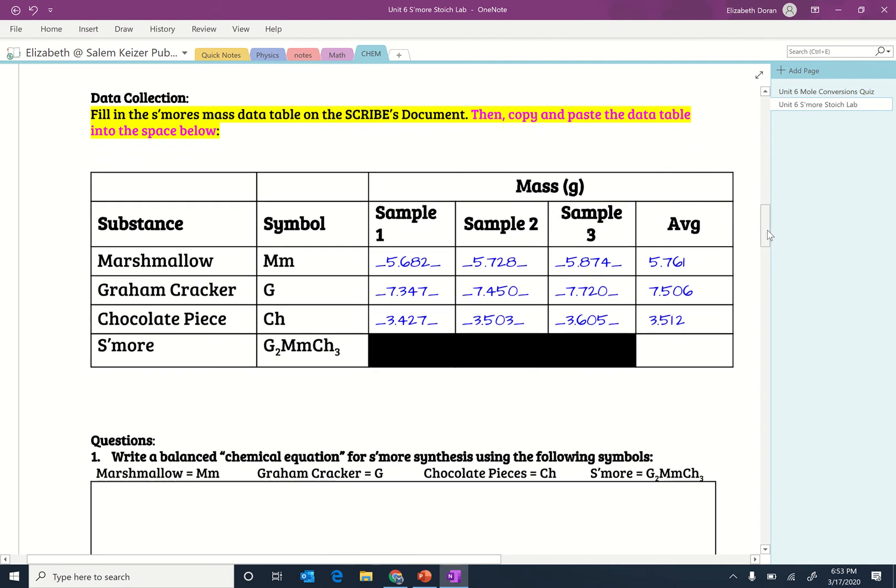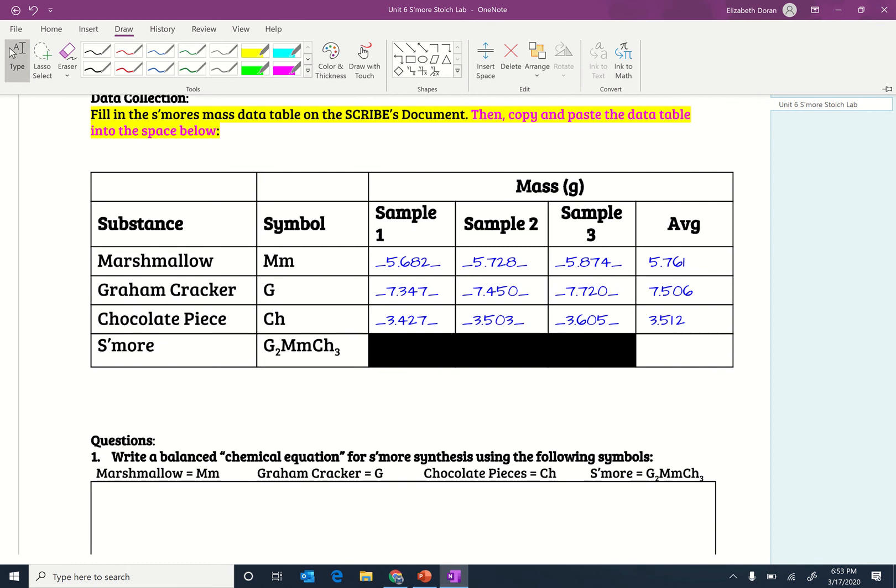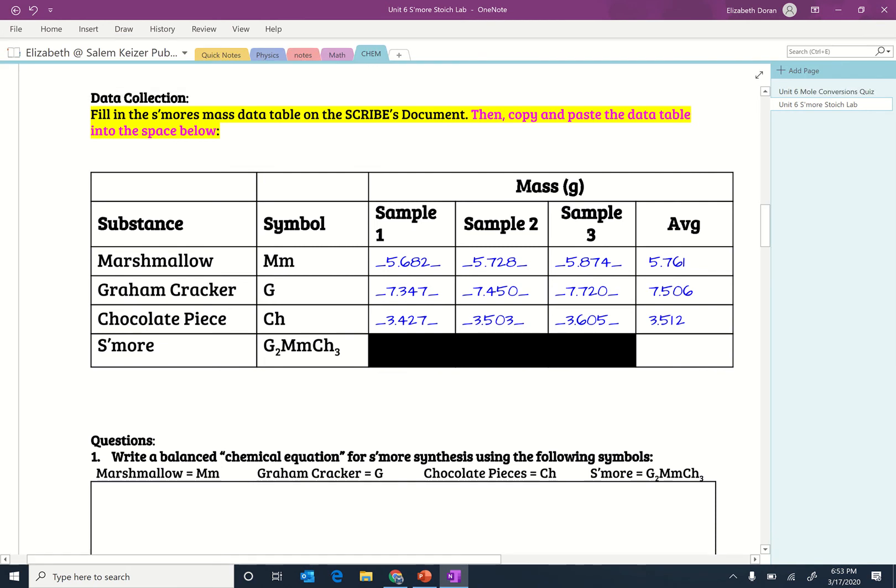The last row of the data table is your mass of your s'more. So you're going to use your average masses for that. Let me get a pen here. So you have one marshmallow, the mass of one marshmallow, average mass of a graham cracker, and average mass of a chocolate piece. With a s'more, you have two graham crackers.